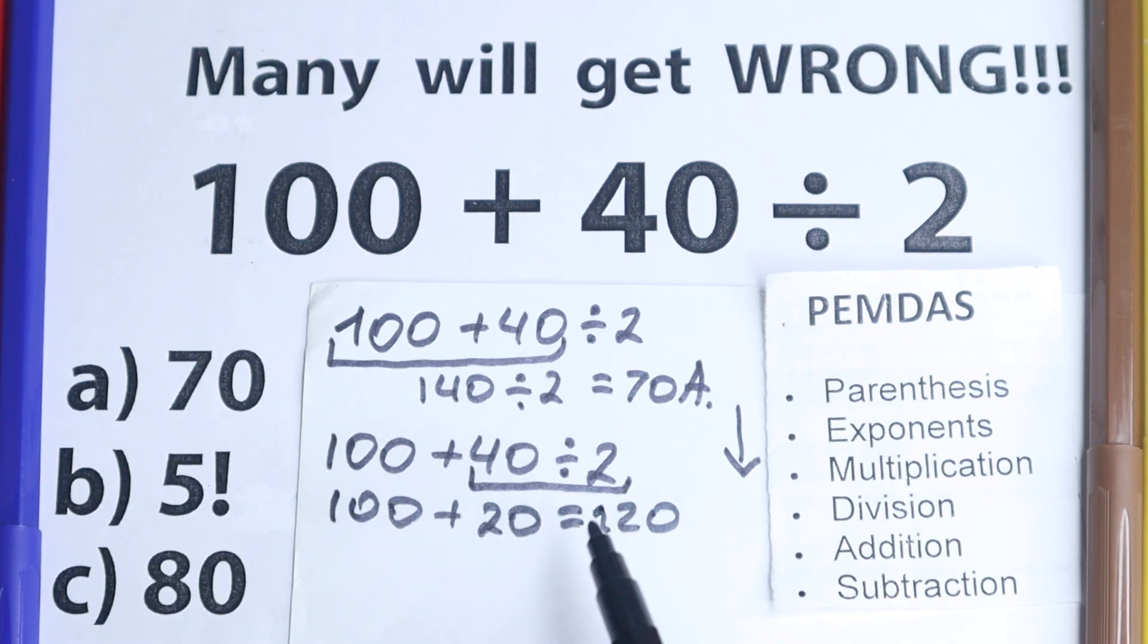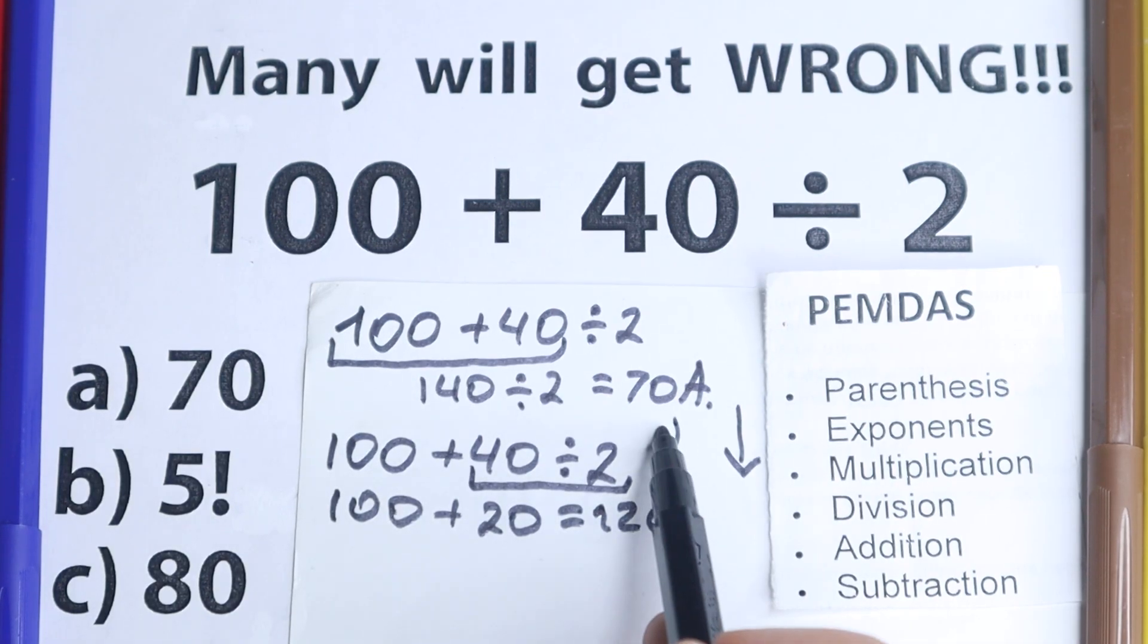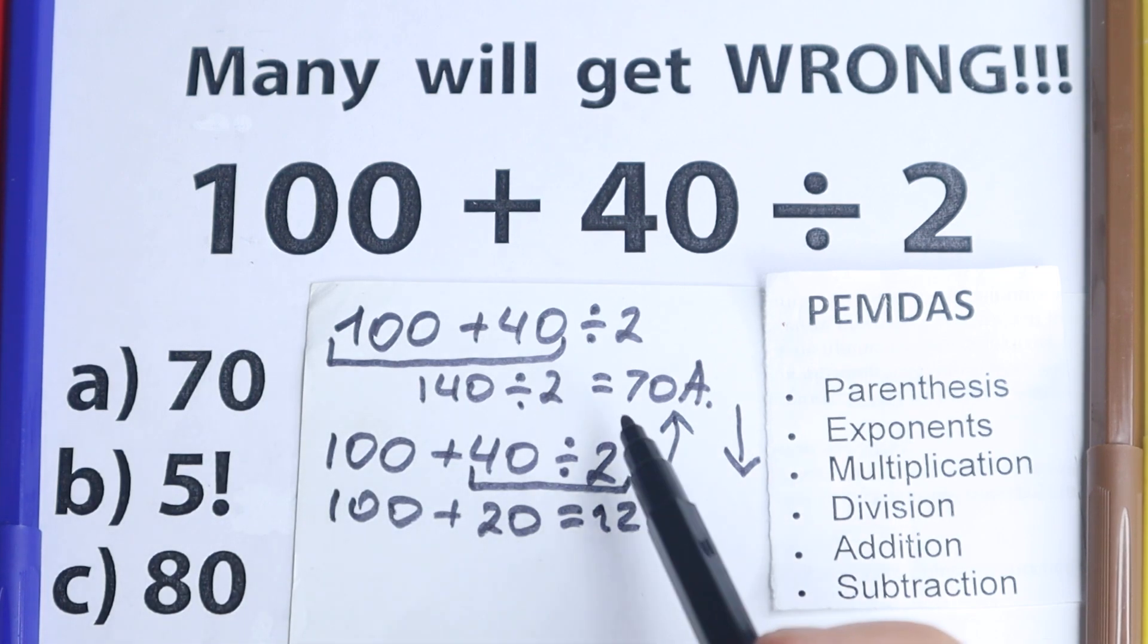But then a lot of students tell us, I don't have this option right here. We have 70, we have 80, we have option B 5 factorial. We don't have this 120. And then they make a wrong move because they go back. They go to this option 70, they go to option A.